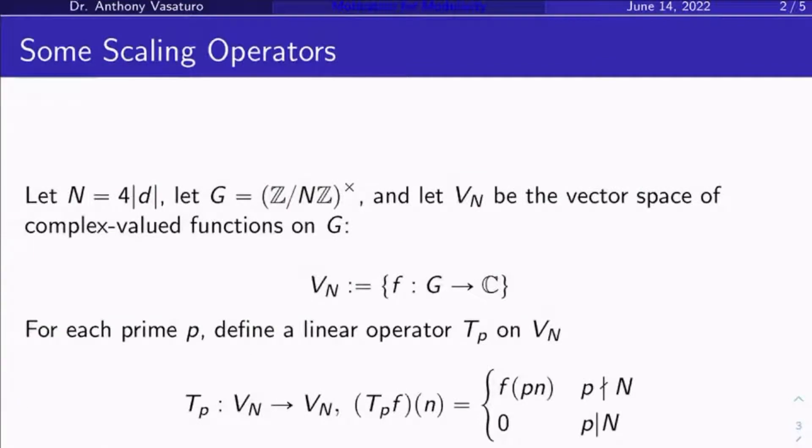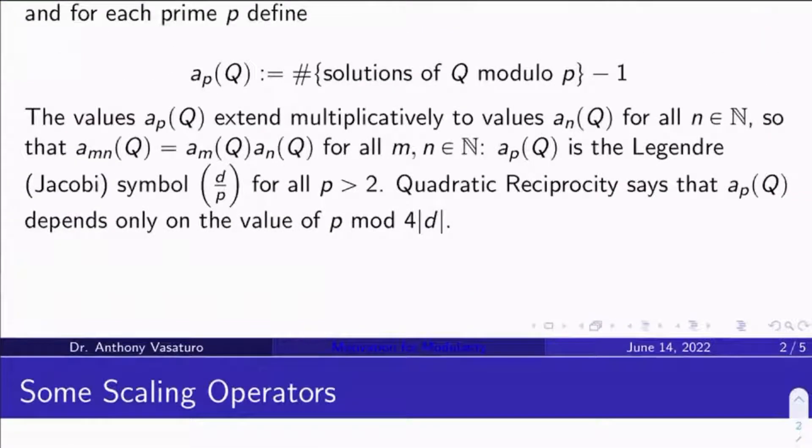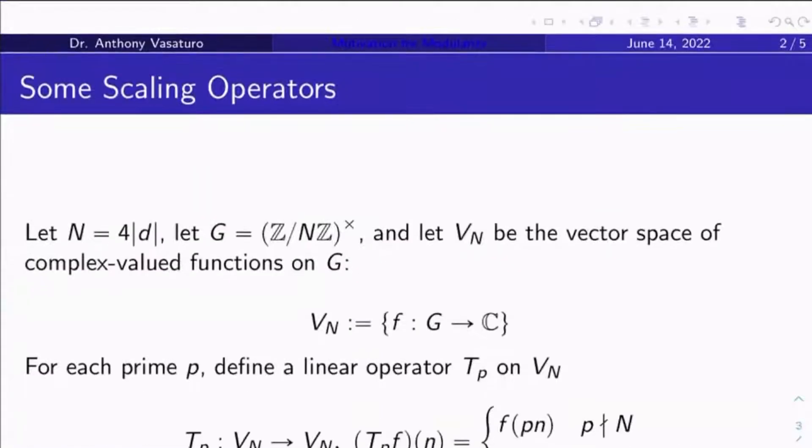Okay, I'm going to introduce some scaling operators now. So let's take this special modulus here, 4 times absolute value d. Let's just call it capital N, and then let's let G be the group of units in Z mod N Z. Let's let V_N be the vector space of all complex valued functions on G here. So it's just the set of all functions from G to the complex numbers.